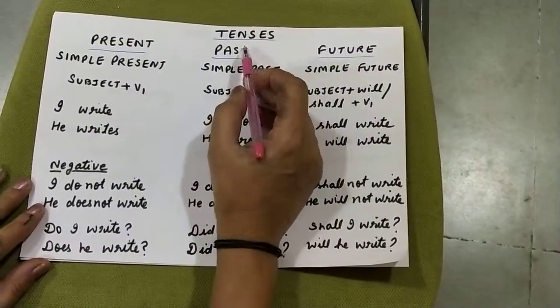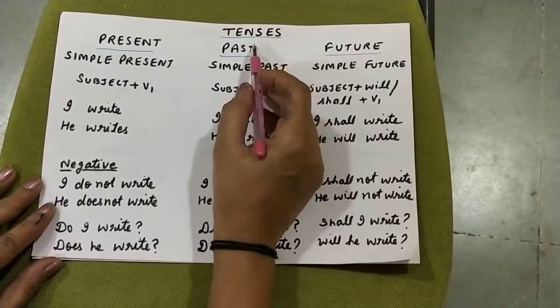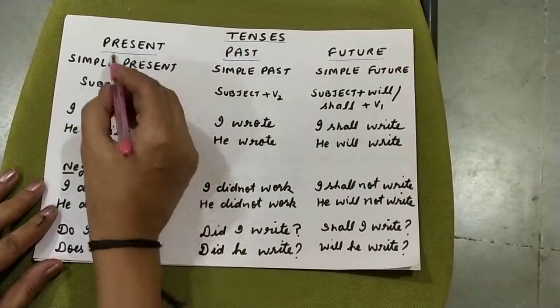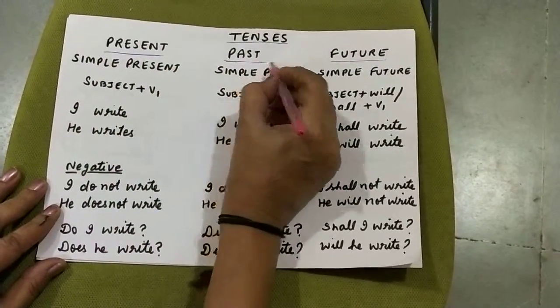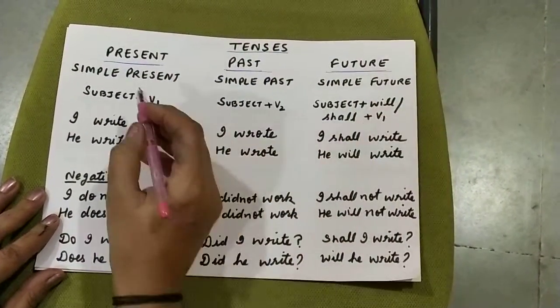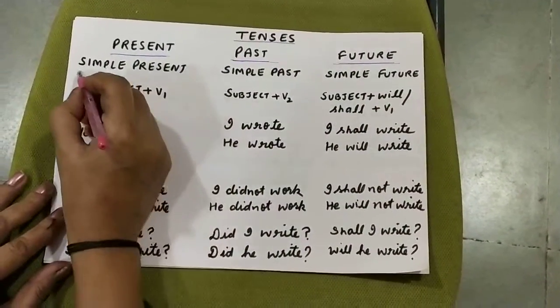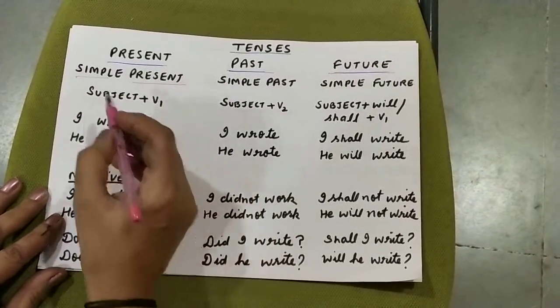Children, today's topic is tenses. Tenses are of three types: present tense, past tense, and future tense. First we'll start with the simple present tense.